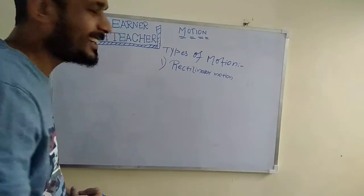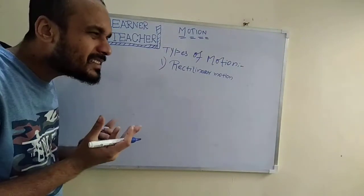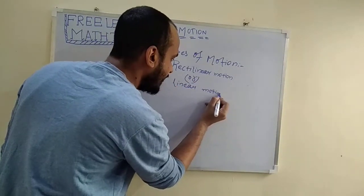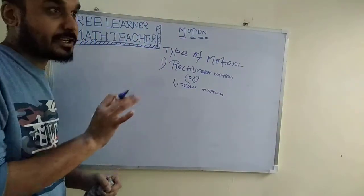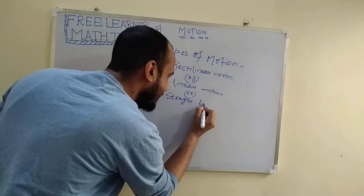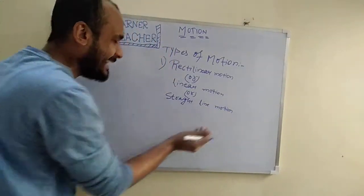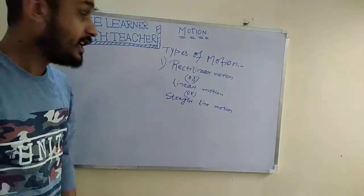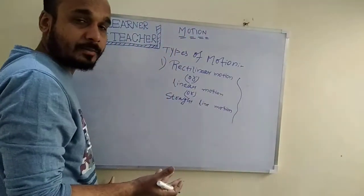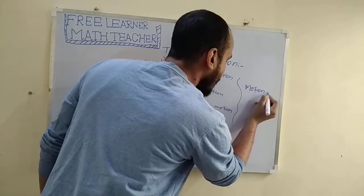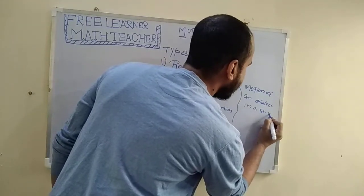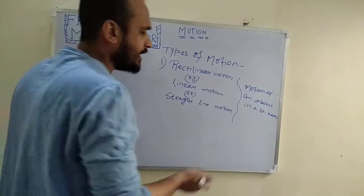If I ask you what is rectilinear motion, 99% of students are unsure. But if I write 'linear motion', 10% say they know it. And 90% still get confused. But if I write 'straight line motion', then 100% become familiar with the topic. It means rectilinear motion, linear motion, and straight line motion are the same thing. So the definition of rectilinear motion is simply: motion of an object in a straight path.